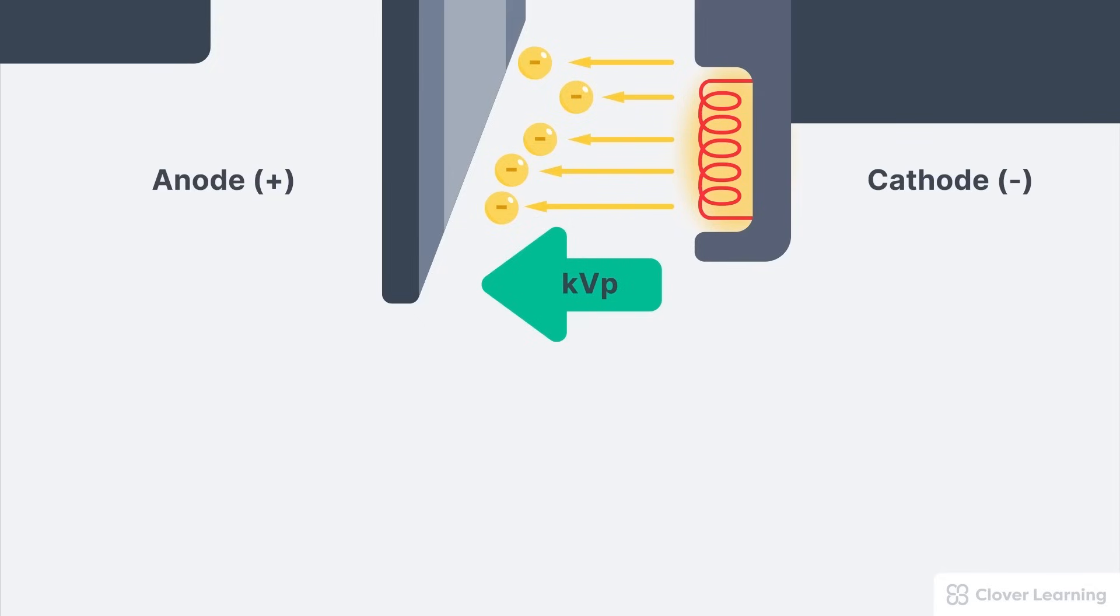The kVp creates a strong negative charge in the filament that forces the electrons across the X-ray tube to the positively charged anode. This makes sense since opposites attract—the electrons are repelled by the negatively charged cathode and attracted to the positively charged anode.